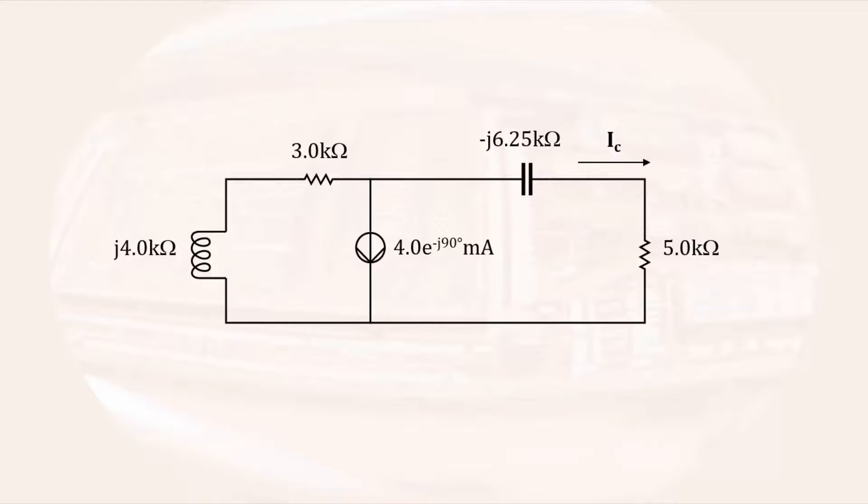To begin mesh current analysis, we will define two mesh currents, Ia and Ic. I will then define the polarity of all the voltages, keeping in mind the passive sign convention and the direction of the mesh currents. To simplify the loop equations, I am going to define an arbitrary voltage across the current source. That will allow us to write separate KVL equations for loop A and loop C.